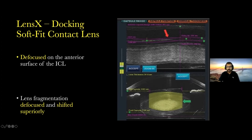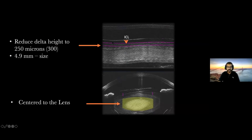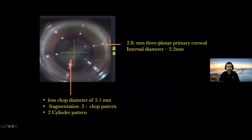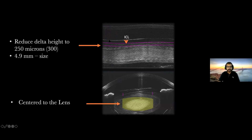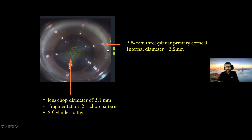This was the first problem encountered — defocusing because of the higher refractive index of the ICL. We performed a manual reduction, bringing the marking down to the level of the capsule, and reduced the delta to around 250 microns compared to the default of 300 microns. A 4.9 mm capsulorrhexis size was set. The lens centration was brought down to a normal position, with fragmentation kept around 800 to 2000 microns away from the anterior and posterior capsule. A 2.8 mm planar primary corneal incision was made, with a lens chopping pattern of 5.1 mm diameter, two chops, and a two-cylinder fragmentation pattern in the central area.